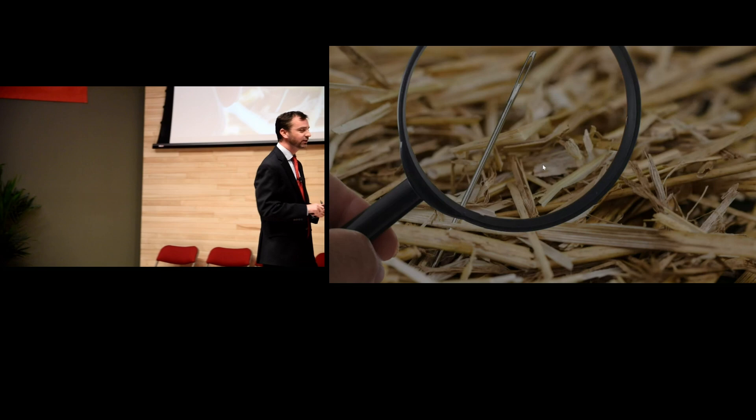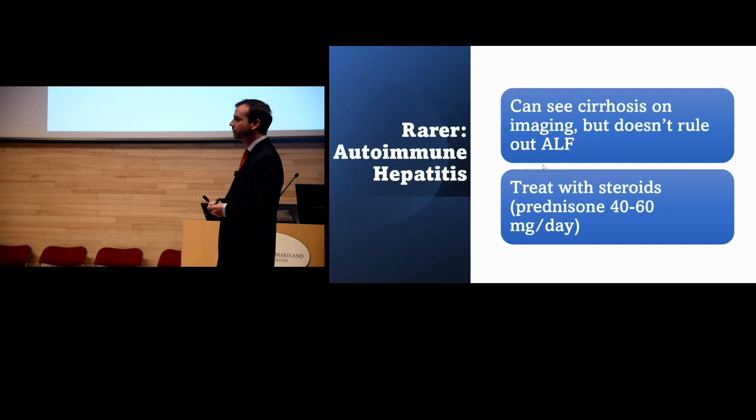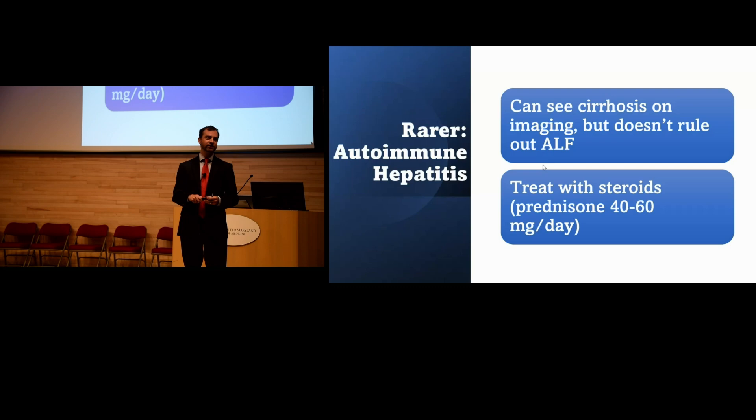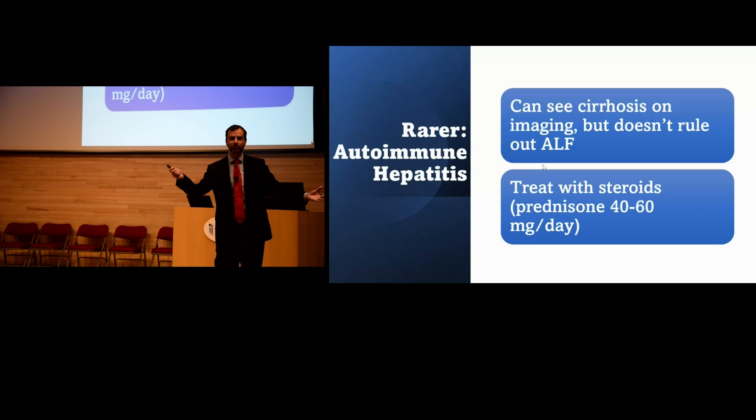Tip number five: looking for rarer causes. Autoimmune hepatitis (AIH) is something we chase fairly often in the MICU and is relatively rare. Have a higher suspicion for AIH if the patient has other immunologic or autoimmune conditions. There are various antibodies to send — anti-liver kidney microsomal and anti-smooth muscle are the two biggest ones — and the treatment of choice is steroids, 40 to 60 mg of prednisone per day.